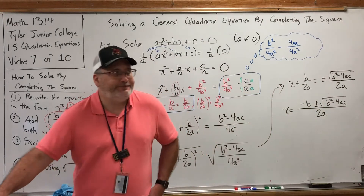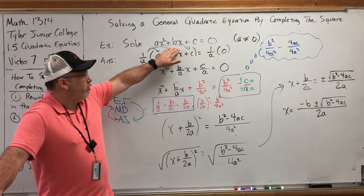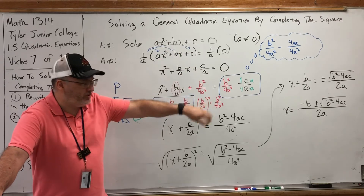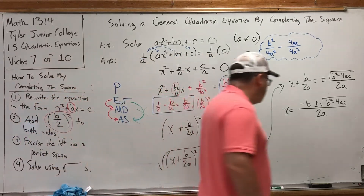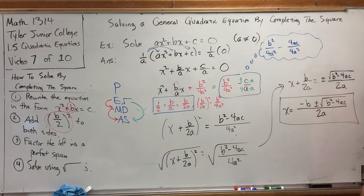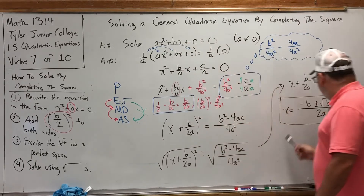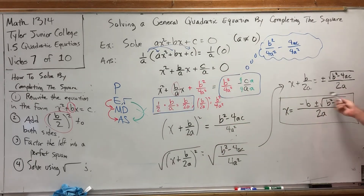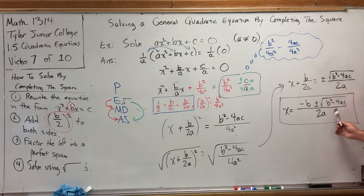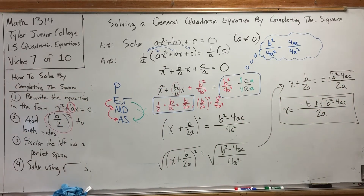Well, that was a lot to do. But the purpose of doing it was to answer the question: if we complete the square on a general quadratic equation, is there a quicker way to just calculate the solutions? And the answer is yes. This basically says, if you can tell me what the a, the b, and the c are in this equation, do this to them and you'll have your solutions. You can completely bypass the completing the square process, because you already have a generic result. You may recognize this — if not, watch the next video. Thank you.